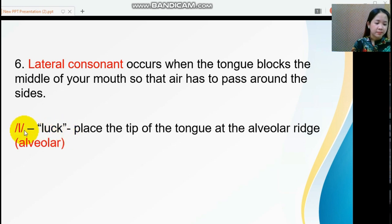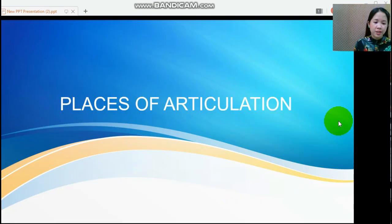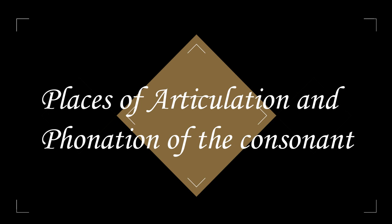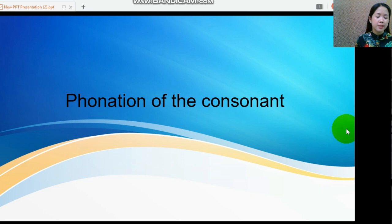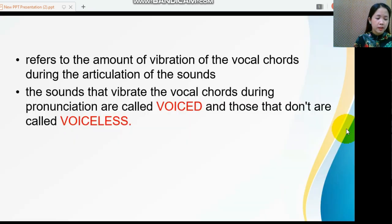Then we have the places of articulation, which refers to the different parts of our vocal tract and how those parts affect speech sounds. It also discusses how the consonants are formed. The phonation of the consonant refers to the amount of vibration of the vocal cords during articulation. Sounds that vibrate the vocal cords are called voiced, and those that don't are called voiceless.